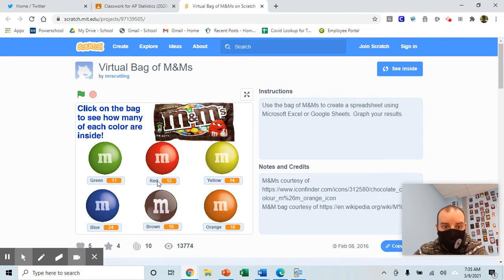So our sample: 17 green, 12 red, 14 yellow, 24 blue, 15 brown, 18 orange. So you're gonna get your own sample. Everyone should have their own unique sample of M&Ms in their bag. And then we're going to use that information to compare it to what's stated should be true.